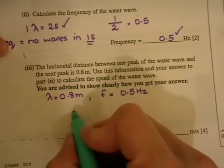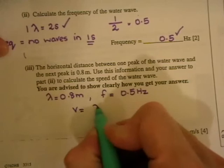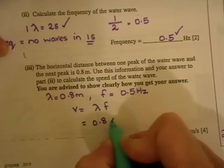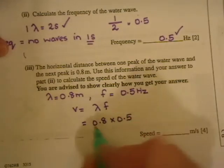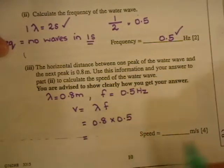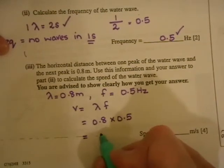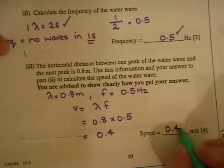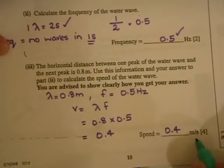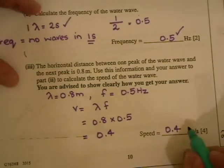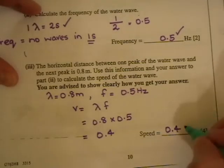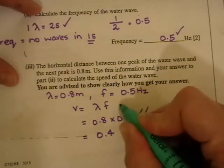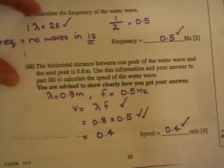So you are going to write down your equation, V equals lambda F. And that is equal to 0.8 times 0.5. And you are going to get an answer of 0.4. So it is 0.4 metres per second. So to get the marks you get one mark for this, two marks for putting the numbers in, and one mark for V equals lambda F.